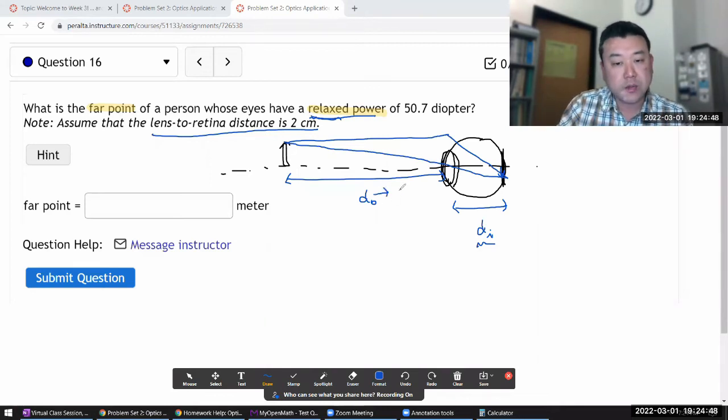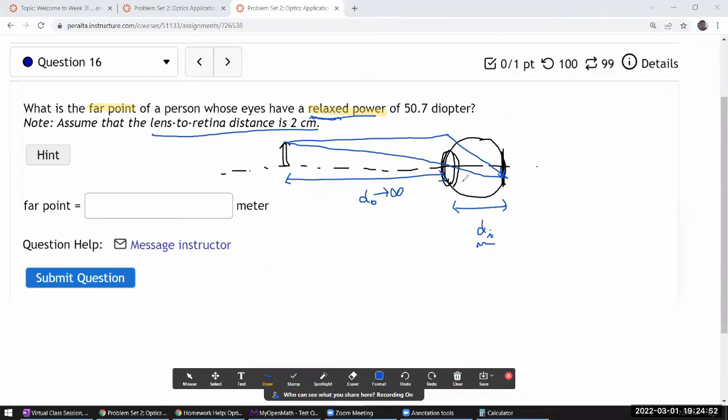And for a normal eye, this object distance would approach infinity, so that with the relaxed lens of the eye, it focuses on the retina with a faraway object. But I think I'm assuming this question is describing a nearsighted person, so hopefully this far point is a non-negative finite quantity.